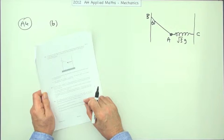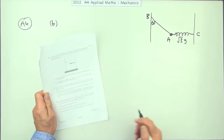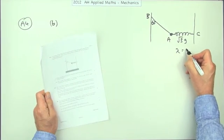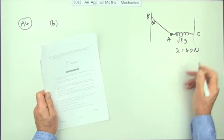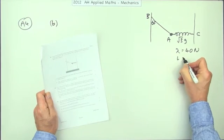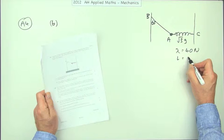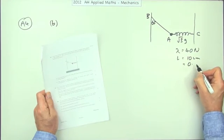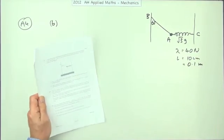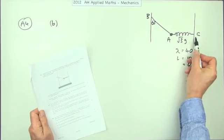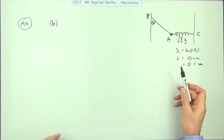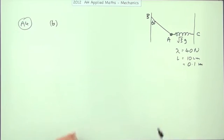Part B for two marks. The spring has a modulus of elasticity of 40 newtons and a natural length of 10 centimetres. So immediately I'm going to rewrite that as 0.1 metres. Calculate the distance AC, which is just like saying, what's the stretched length of the spring? And remember,